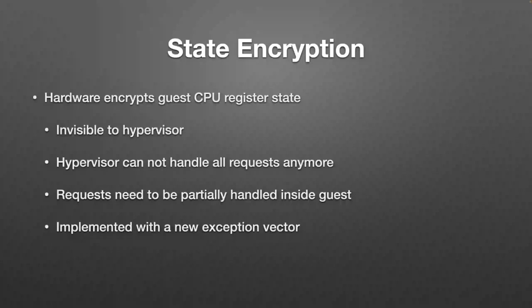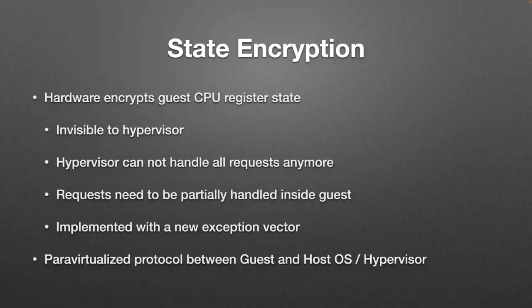On AMD SEV-ES, this is implemented via a new exception vector — the #VC exception, or vector 29. This vector is invoked inside the guest when an intercept would normally occur. If the guest executes an RDMSR instruction that is intercepted, the hypervisor no longer sees the intercept; instead the guest gets a #VC exception. In the #VC handler, the guest does instruction decoding, communicates with the hypervisor, gets the MSR value, and writes it back to the register state — all happening inside the guest.